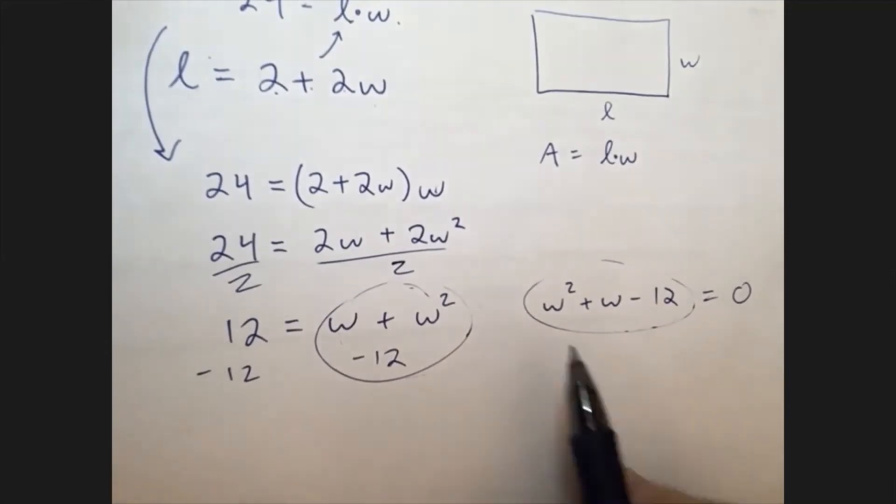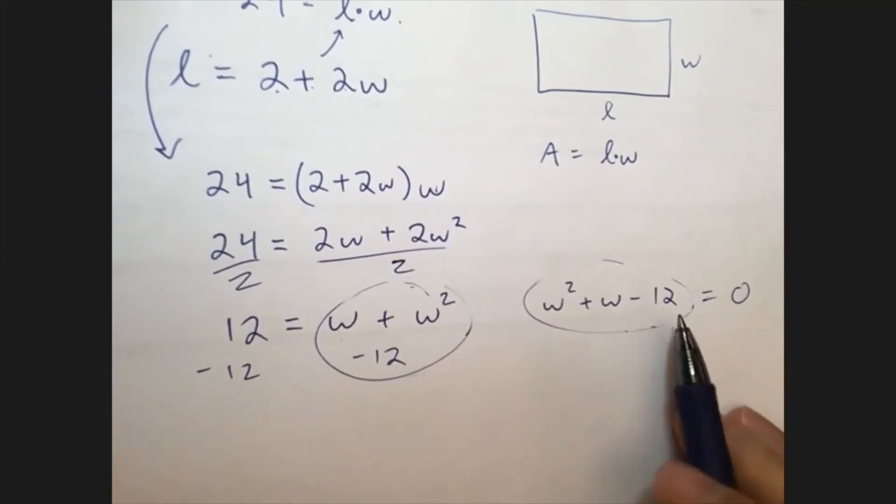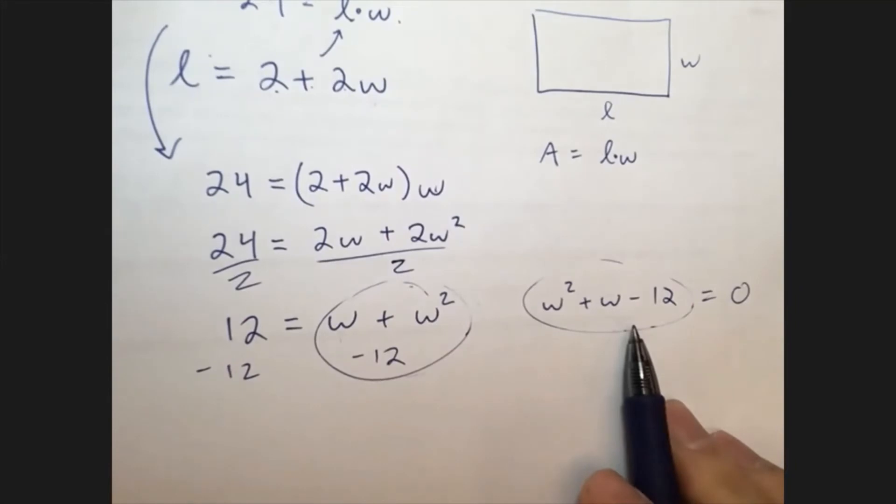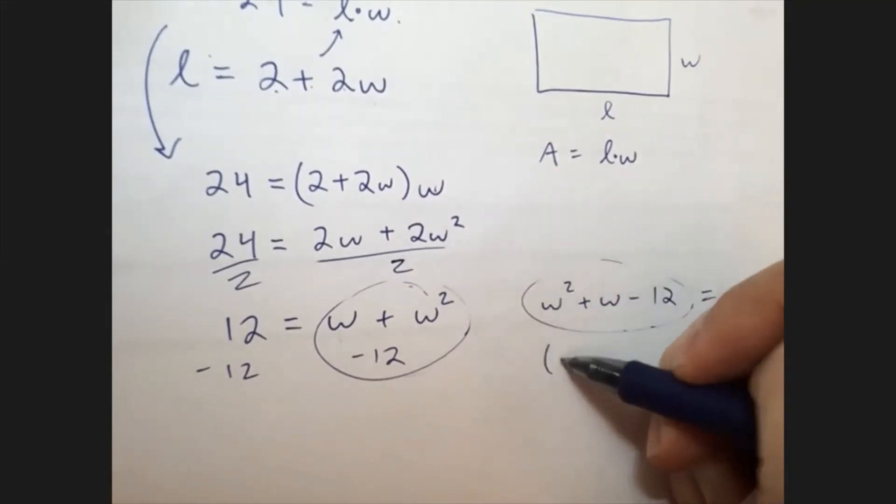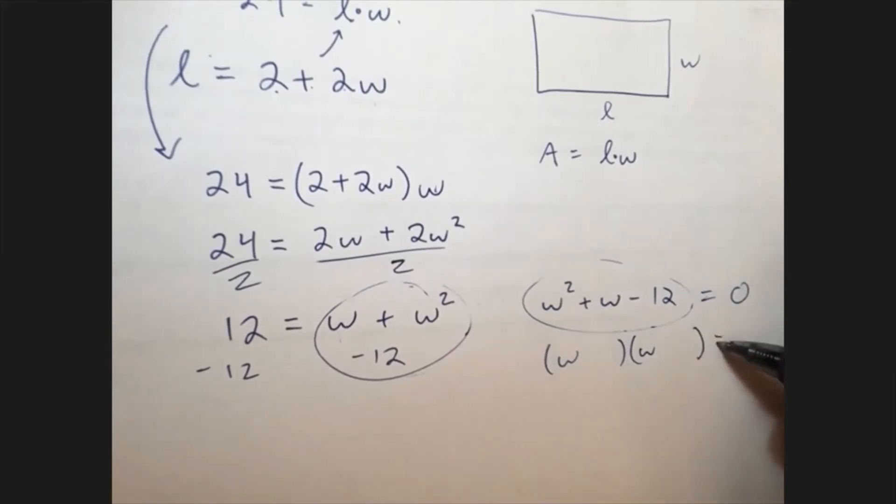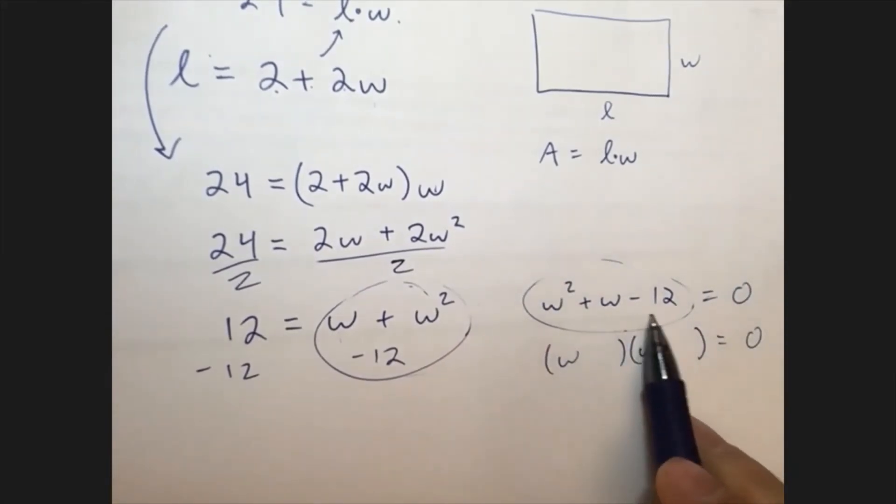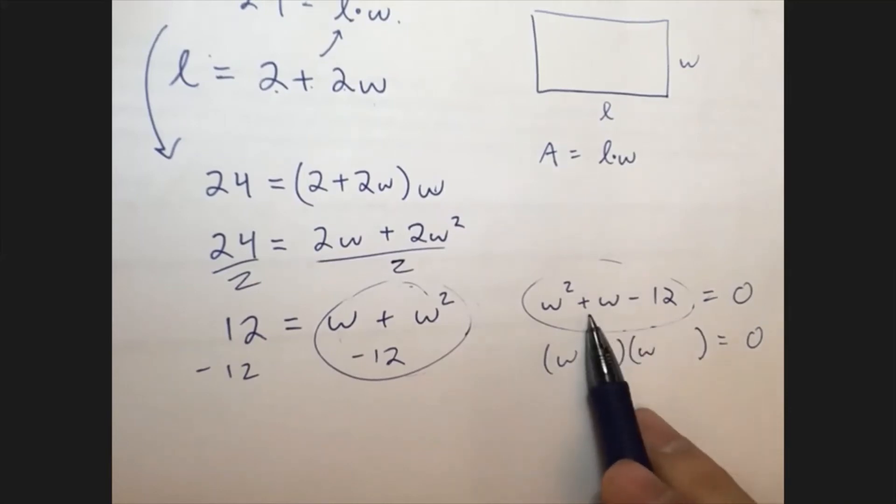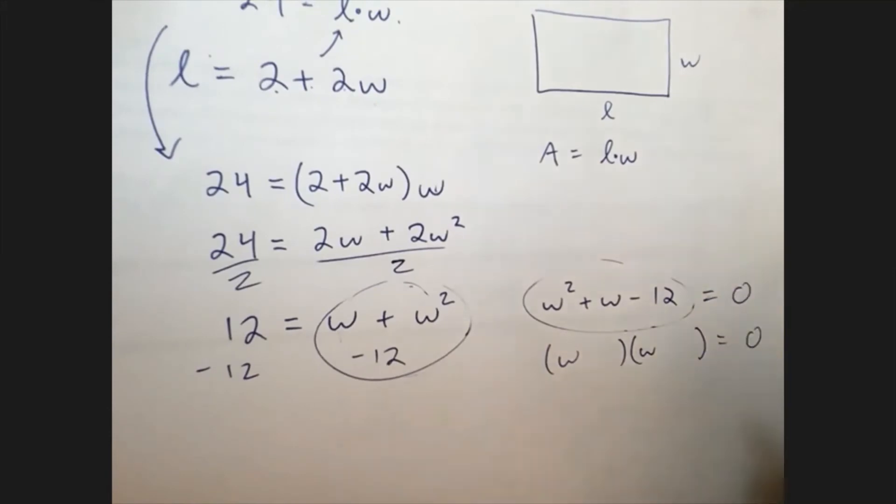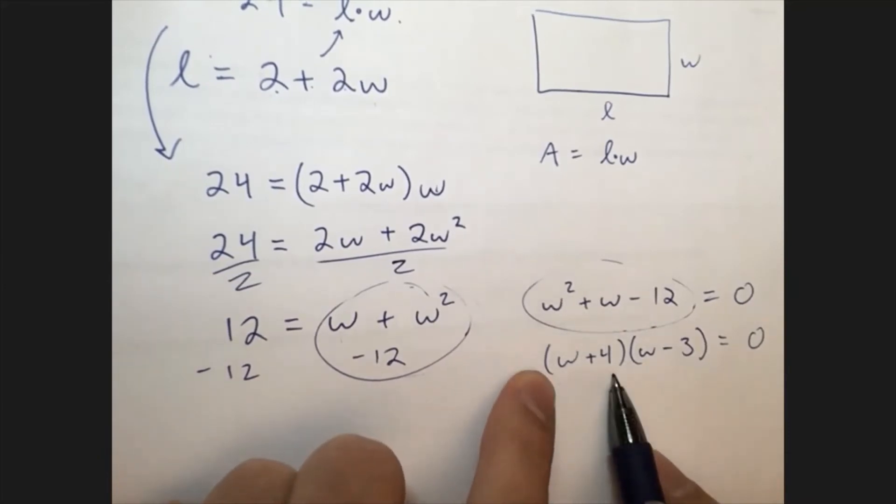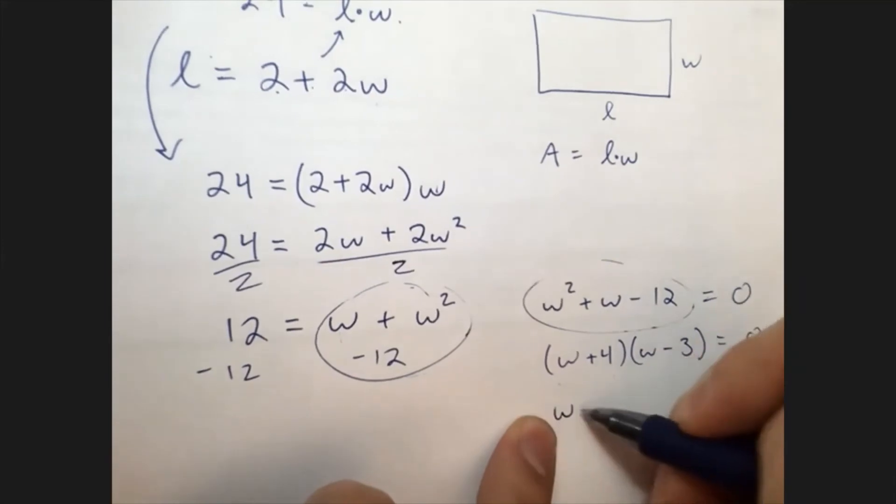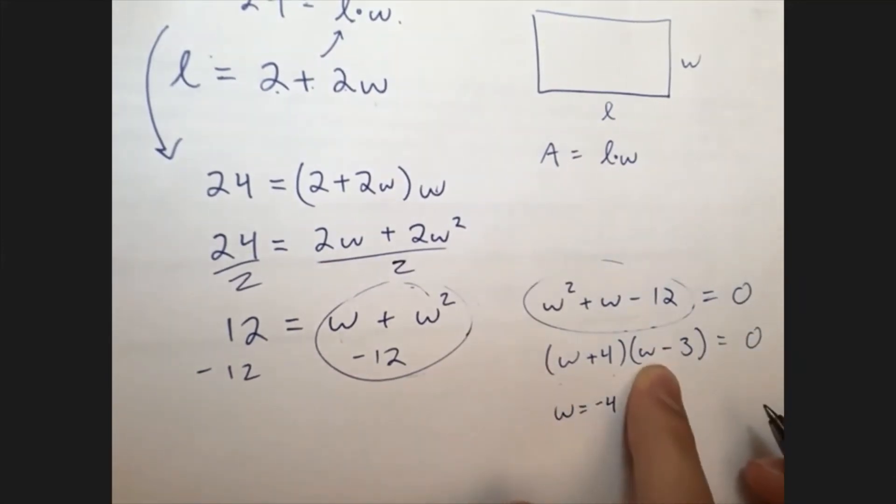Now, solving this, we've learned lots of ways to solve a polynomial equation, but I think the easiest way for this one would be to factor. I think this is quite easy to factor. I'm looking for two factors of negative 12 that add to 1. Negative 12 that add to 1. So how about positive 4 and negative 3? Okay, there we go. So I can see the two answers. The thing that makes this 0 is W equals negative 4, and the thing that makes this 0 is W equals 3.